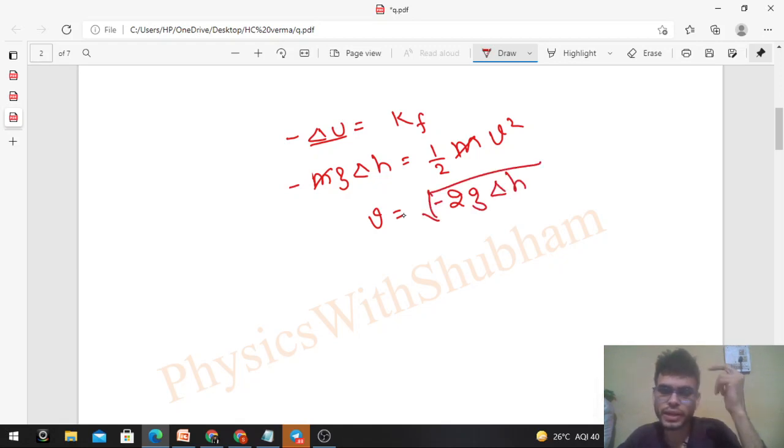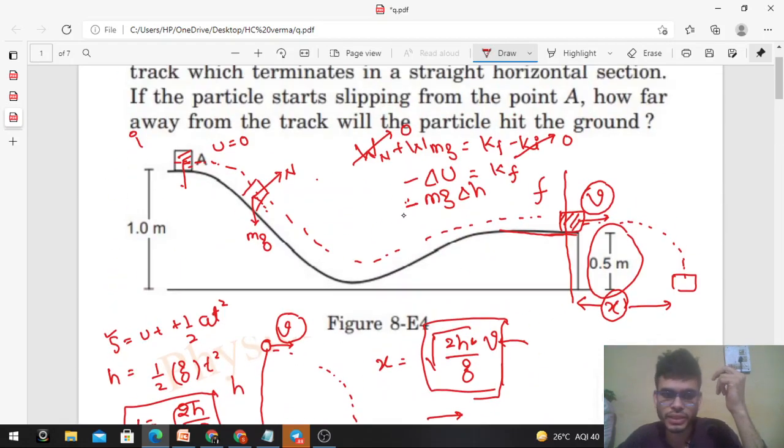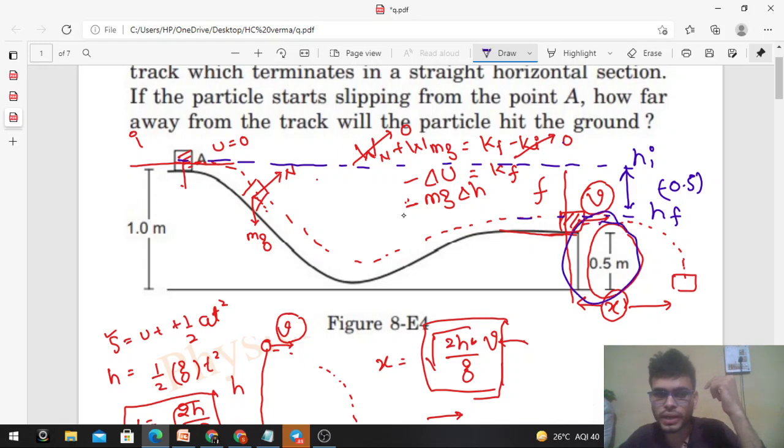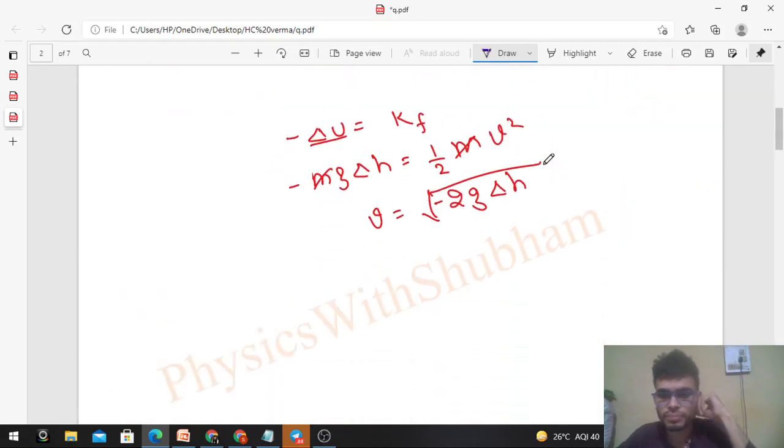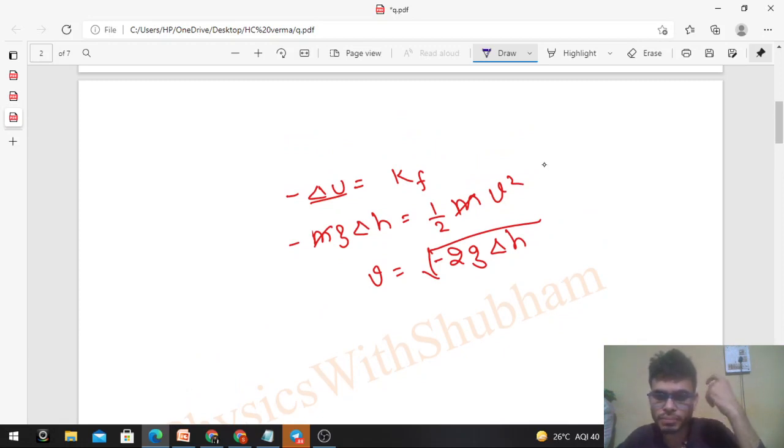Now what is Δh? Δh will be h_final minus h_initial. This is your h_initial and this is your h_final. This height is 0.5 meters. You can see h_final is below h_initial, therefore h_final minus h_initial will be -0.5. So Δh is -0.5, which gives v = √g.